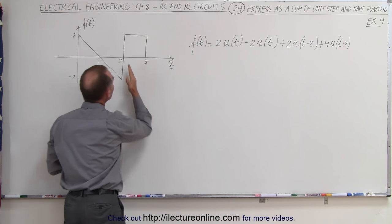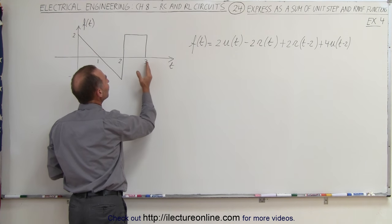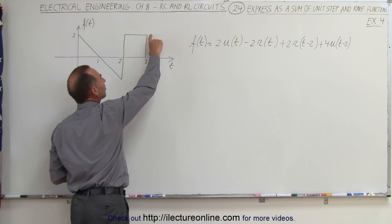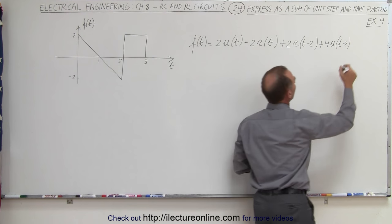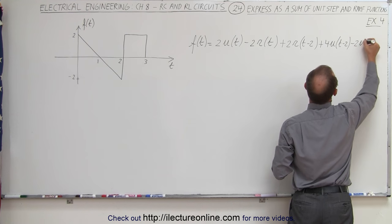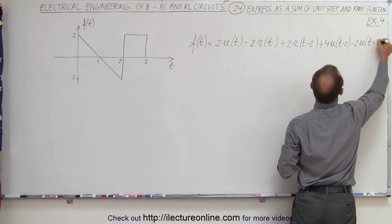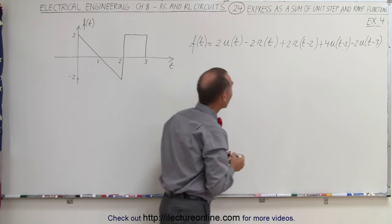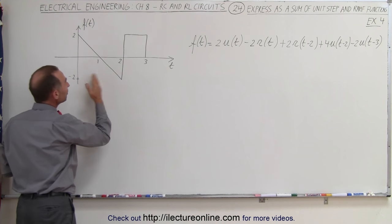And finally we need to get back down to 0 after 3 seconds, so now we have to add a negative step function, so minus 2u offset at minus 3. And that will represent our input.